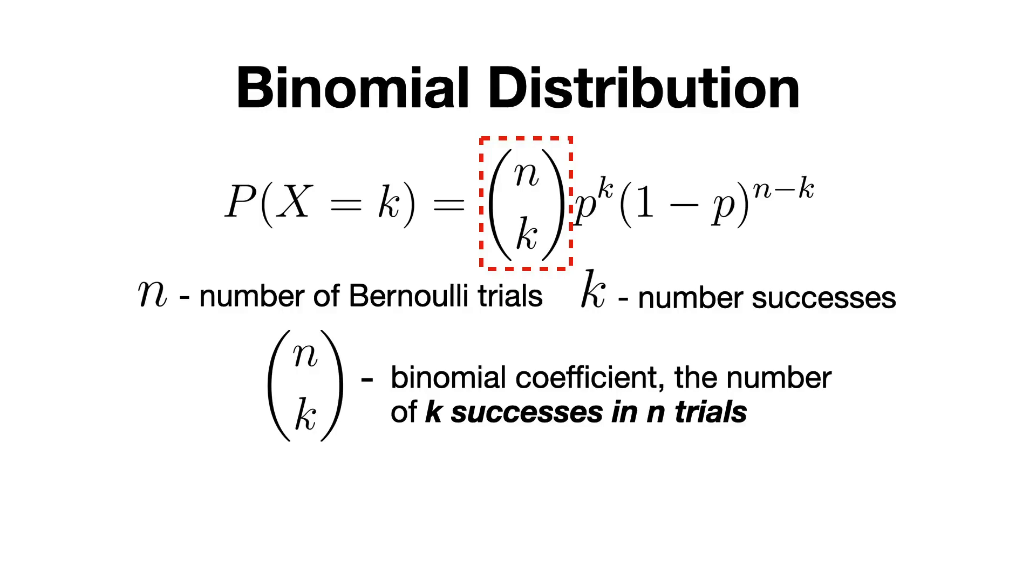I won't go into details about how the binomial coefficient is calculated, since that's not the point of the video, but I've left some references where you can dig more if you want to in the video description. All you need to know is that it gives us the number of different ways we can have k successes out of n trials.